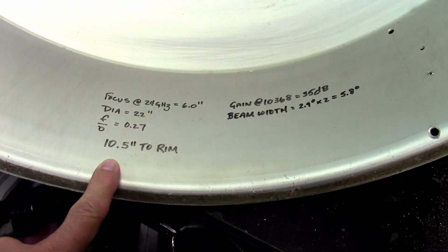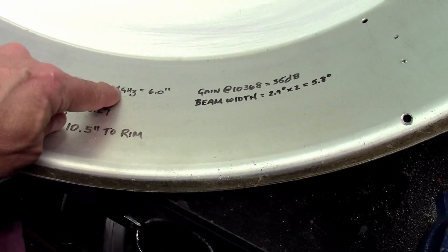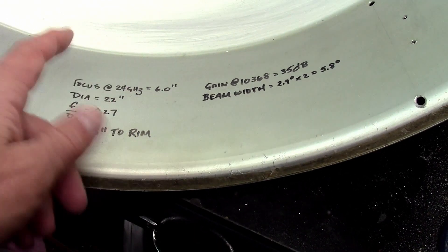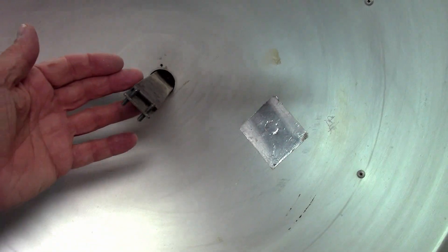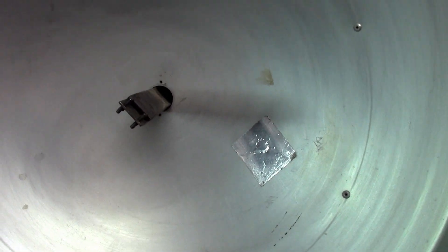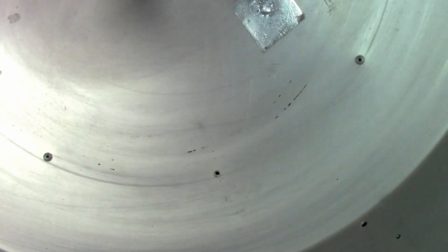Here are the dish characteristics. This is a specification at 24 GHz, but the focus distance from the bottom of the dish to the focus point is independent of frequency, of course. So it's 6 inches. That's the dimension.